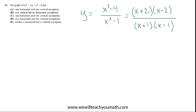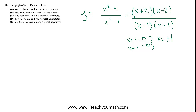Any value that makes the denominator 0 is a candidate for a vertical asymptote. Setting each factor equal to 0 gives x plus 1 equals 0 and x minus 1 equals 0, so x equals plus or minus 1 are candidate locations. We also check whether any of these factors cancel with a factor in the numerator — in this case they do not, since there is no x plus 1 or x minus 1 in the numerator. If there were, that would represent a removable discontinuity or hole, not a vertical asymptote. So these are true vertical asymptotes at x equals 1 and x equals negative 1.